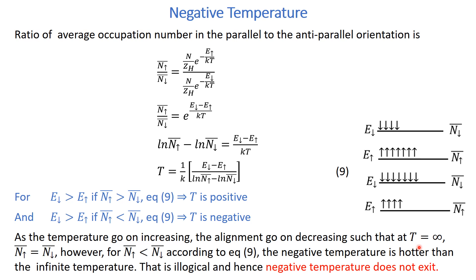As temperature increases, the parallel alignment goes on decreasing and the anti-parallel alignment goes on increasing. When the temperature reaches T = ∞, the number of atoms in the parallel orientation equals the number in the anti-parallel orientation — this is the maximum possibility. To have more atoms in the anti-parallel state than the parallel state, you would need to go beyond infinite temperature, which according to equation 9 corresponds to negative temperature. This means a negative temperature would be hotter than infinite temperature, which is illogical.